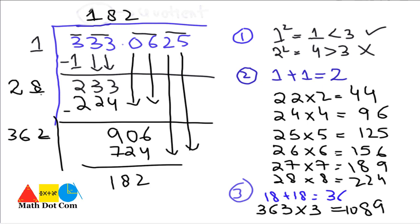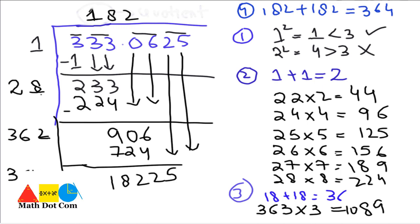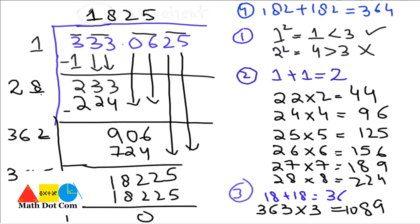Step 4: double the quotient again. The quotient is 182, so 182+182 = 364. We write 364 here with a blank space. We now need to find a number such that 364_×_ = 18225. By checking multiplications, 3645×5 = 18225 exactly. This completes the process. This is a process that requires practice — with enough practice it will become easy to solve quickly.